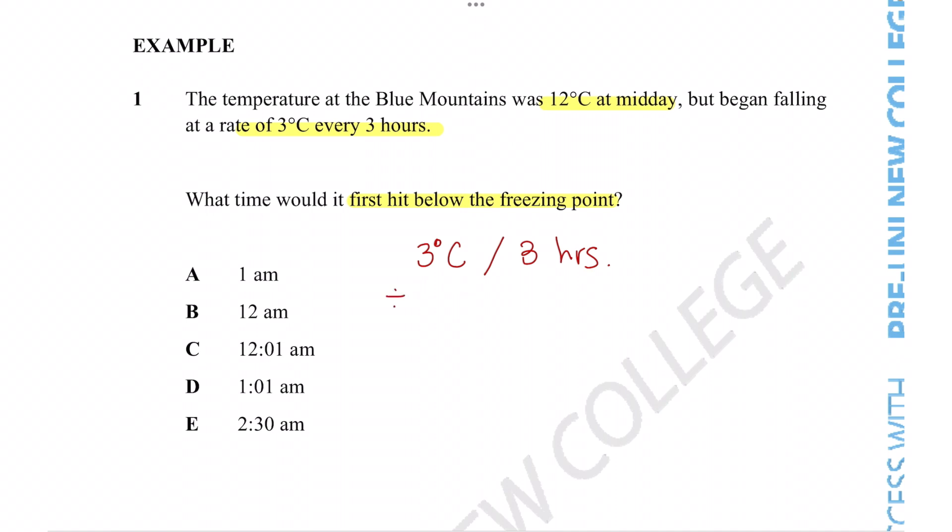We can divide or multiply the entire rate by any number, as long as you do it to both numbers to ensure that the rate is being maintained. We just look at it at a different scale. If we divide both sides by three, we get one degree per hour. So essentially, the temperature is dropping by one degree every hour that passes.